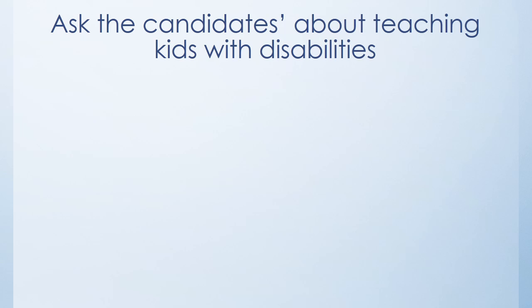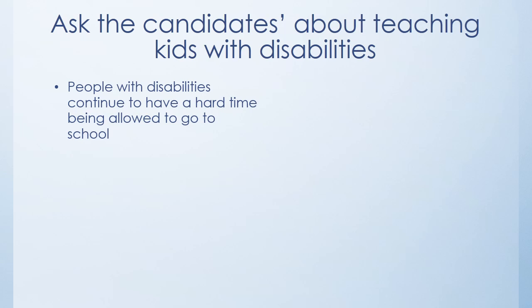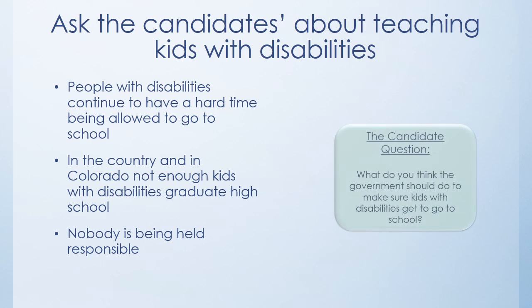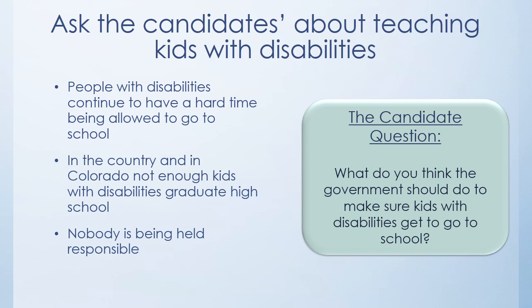Ask the candidates about teaching kids with disabilities. People with disabilities continue to have a hard time being allowed to go to school — in the country and in Colorado. In Colorado, not enough kids with disabilities graduate high school, and nobody is being held responsible. Candidate question: What do you think the government should do to make sure kids with disabilities get to go to school?